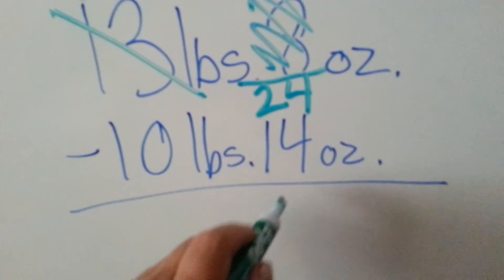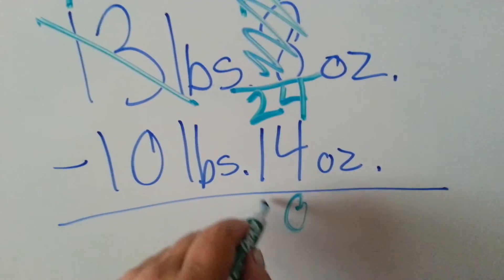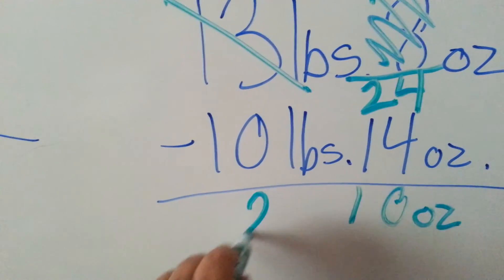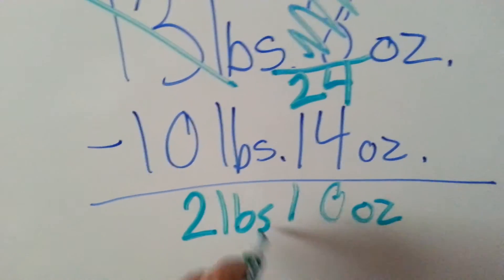24 take away 14 is 10 ounces. 12 take away 10 is 2 pounds. The answer is 2 pounds 10 ounces.